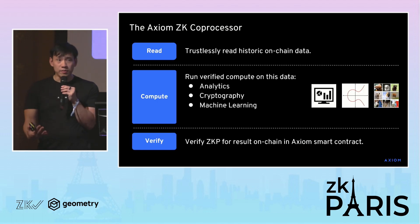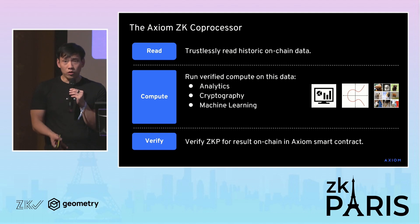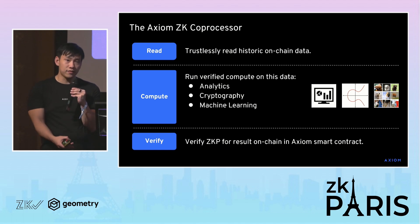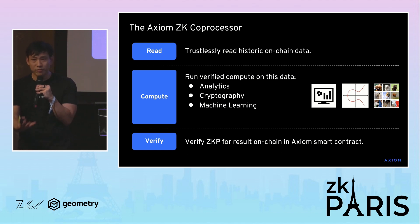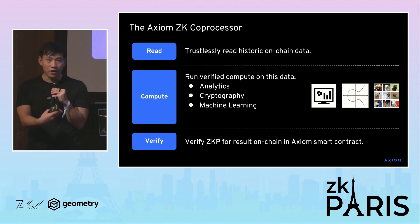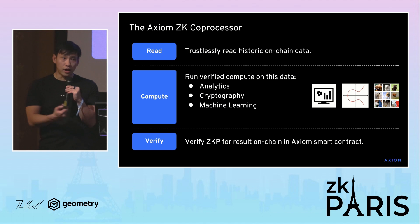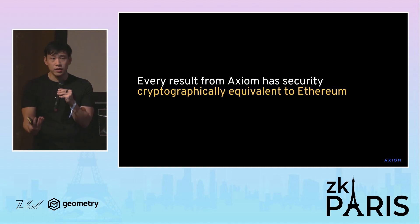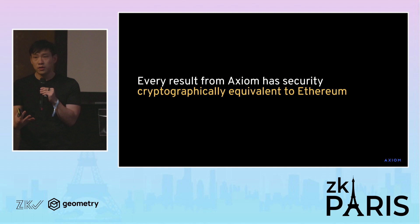What types of things can we do? We can access the full history of Ethereum and allow applications to run analytics, cryptography, or machine learning on this data. No matter what, we always verify a proof on-chain of the data. All the results you get back from Axiom have security that's cryptographically equivalent to accessing data from Ethereum itself.